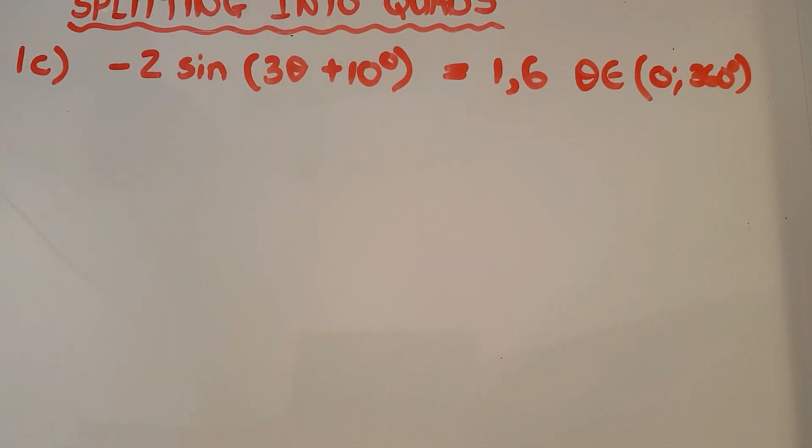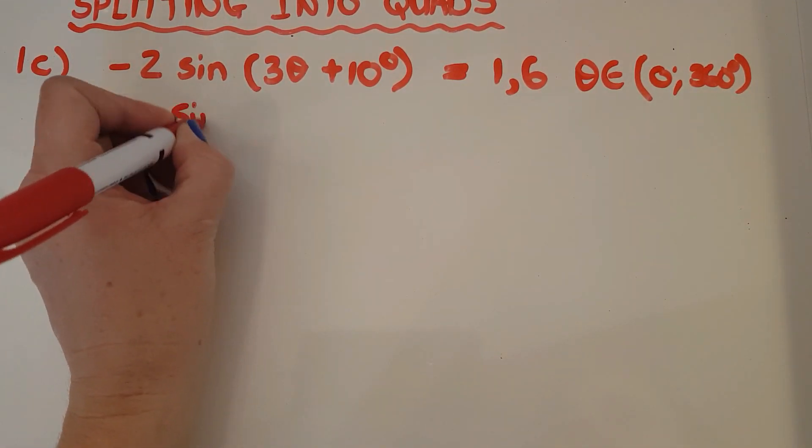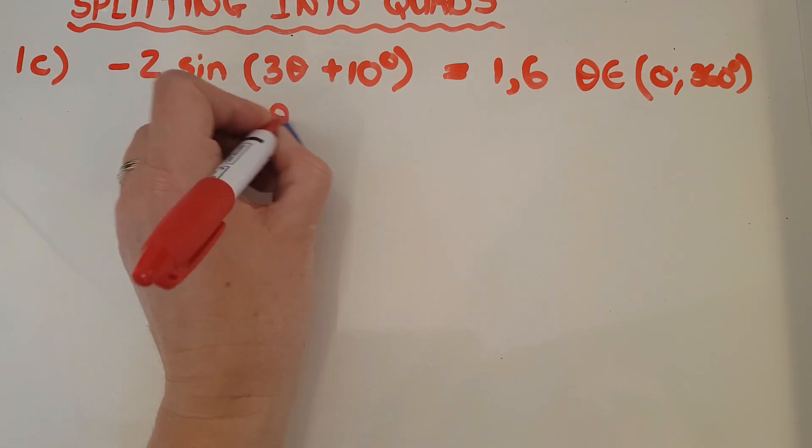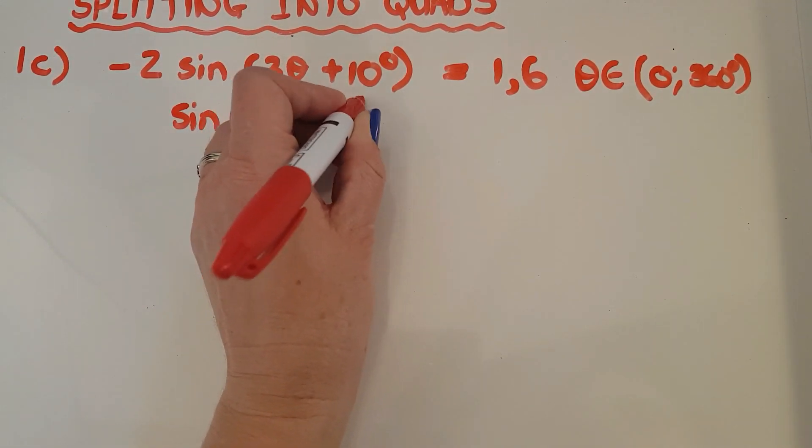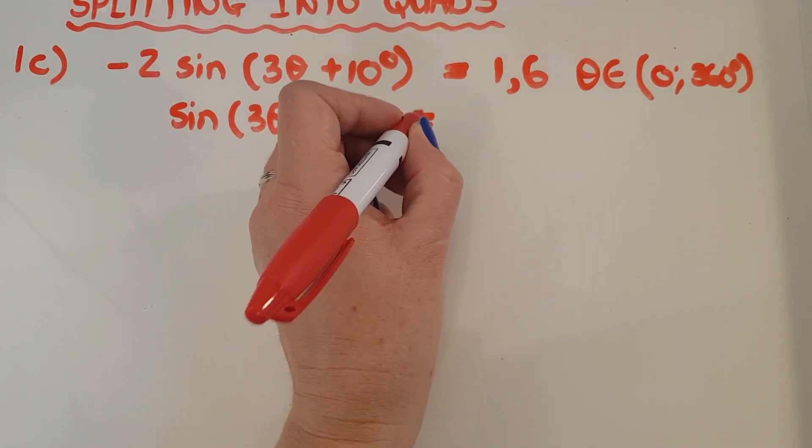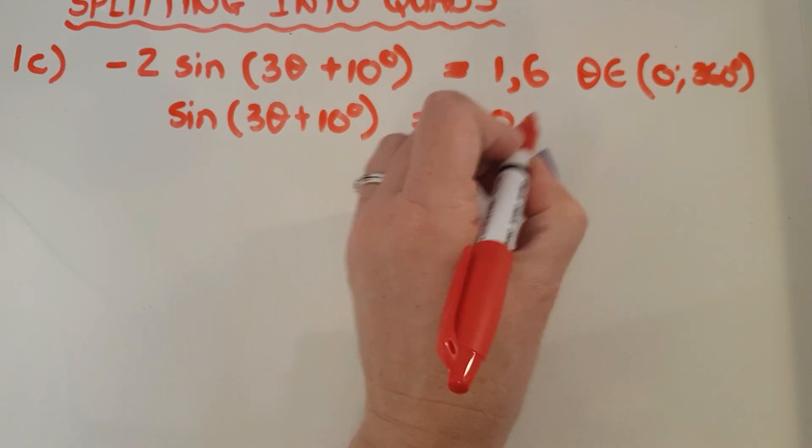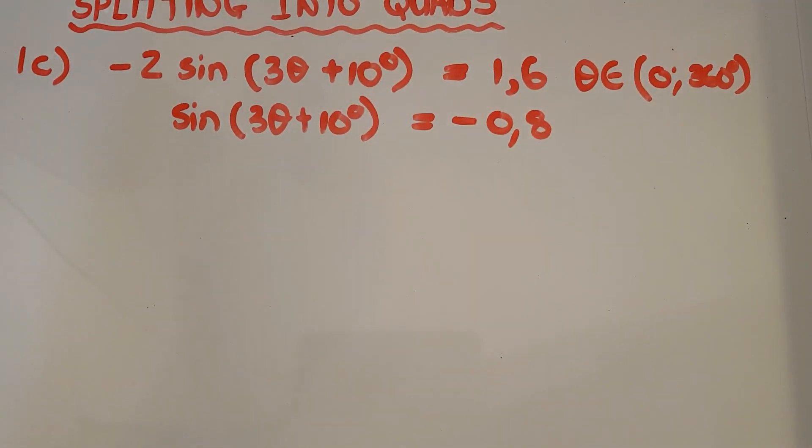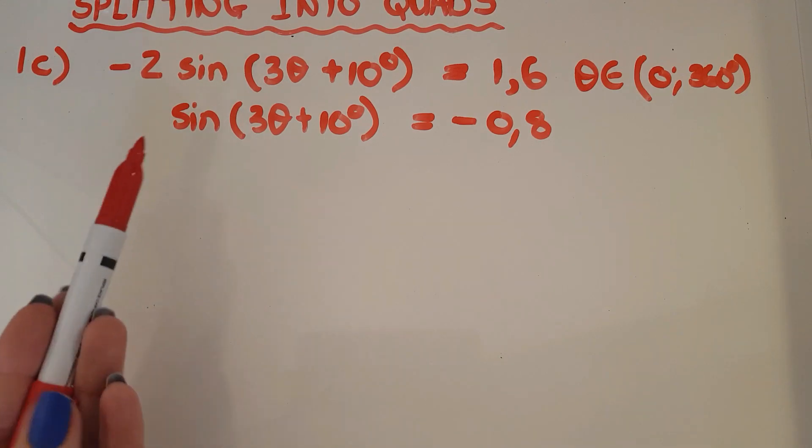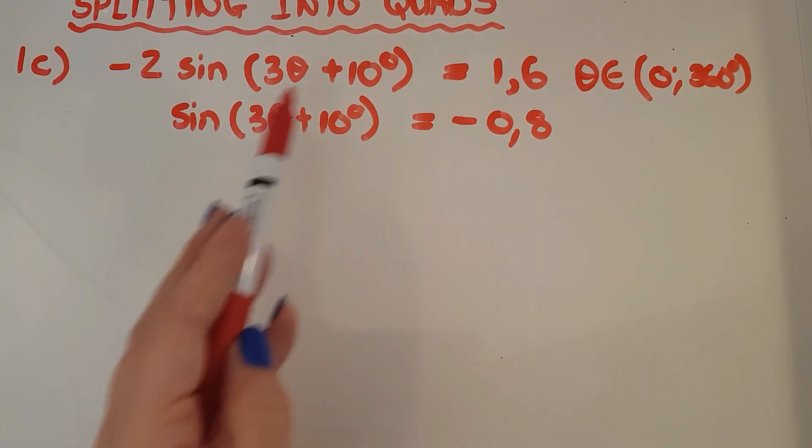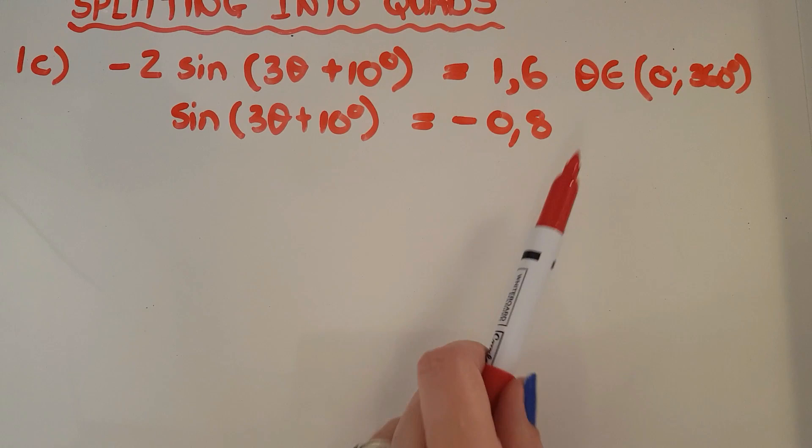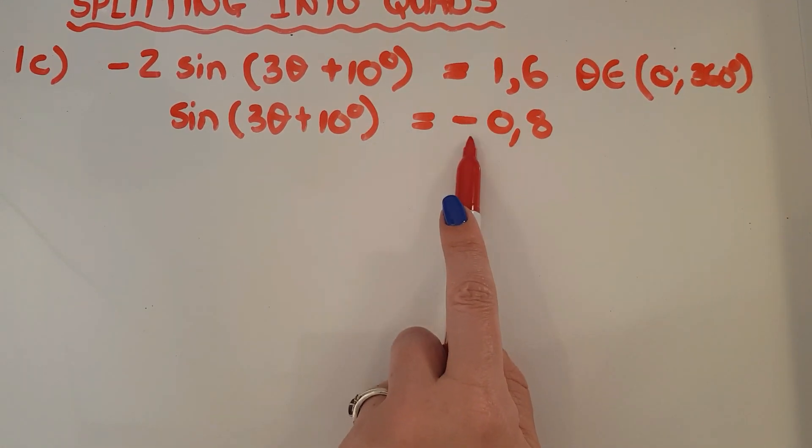And now I'm going to unpack this equation. So first of all, I'm dividing by the negative 2. So I'm going to have sine of this angle. And that's going to give me negative 0.8. I'm ready to do the shift function because I've got sine of an angle, which is a bit complex, but it's still just an angle equals a number. There's a negative.